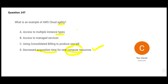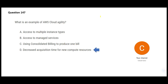Option A — access to multiple instance types — is wrong; it's not agility. Option B — access to managed services — reduces administration effort but is a design best practice, not agility. Option C — consolidated billing — helps leverage discounts by clubbing all departments to reach usage thresholds faster, but that's not agility. Option D is the correct answer for agility.